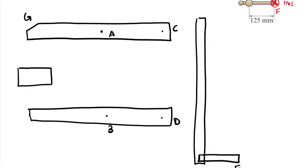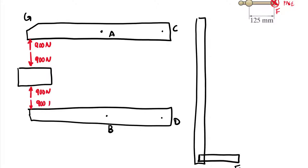Getting into the forces: we want to squeeze the block with 900 Newtons as stated in the problem. Forces are always equal and opposite, so this friction problem is fundamentally a frame and machine problem. We have 900 Newtons at G and 900 Newtons pushing downward on the bottom jaw. Because of the symmetry across the center line, we can analyze just one of these bodies.